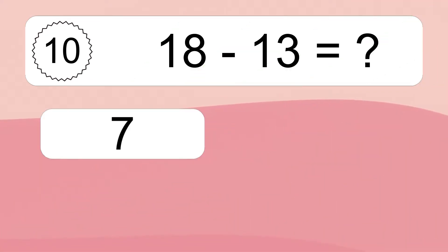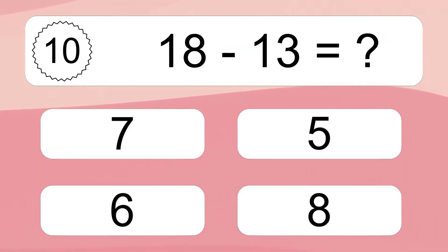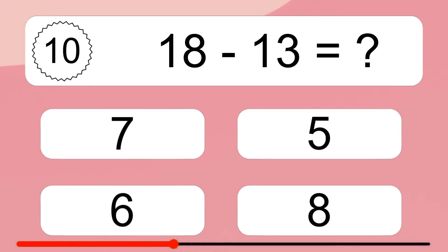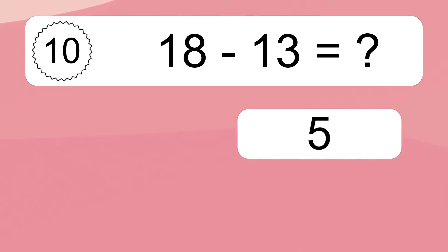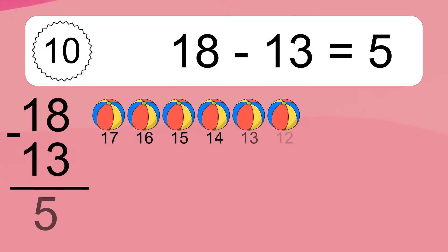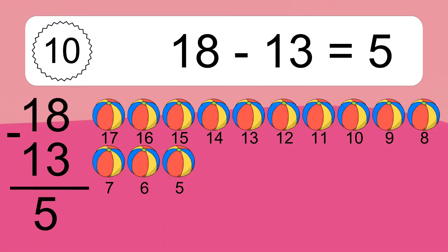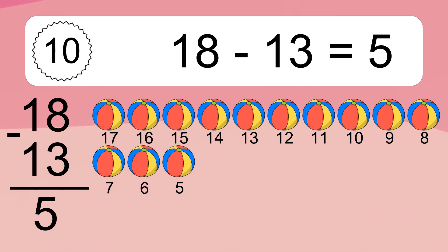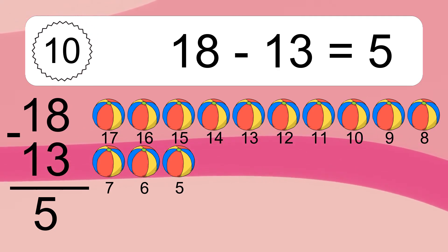18 minus 13 equals what? 18 minus 13 equals 5. Let's count it: 17, 16, 15, 14, 13, 12, 11, 10, 9, 8, 7, 6, 5.